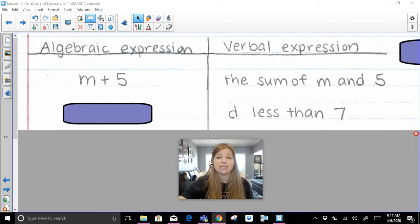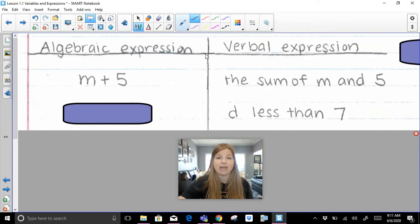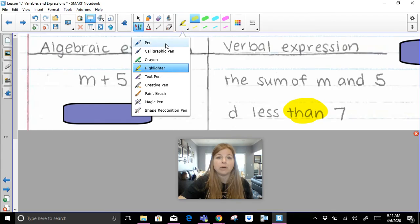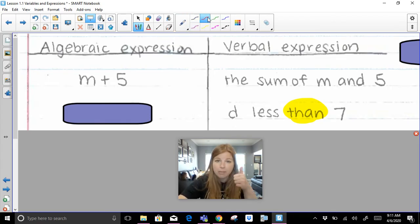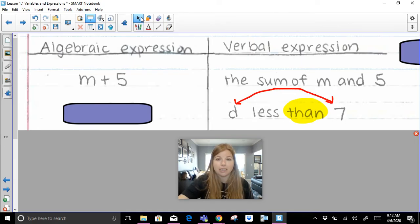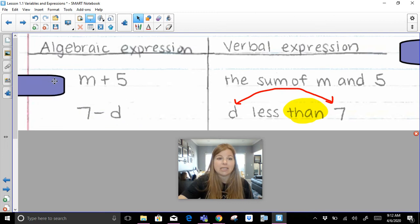The next one, d less than 7. Now, what I need us to note is that d less than 7, than, I'm going to highlight that word than. Than is one of those flipping words. A flipping word, when you see it, from, into, than, to, is going to tell us that we have to flip the values in front and behind it.